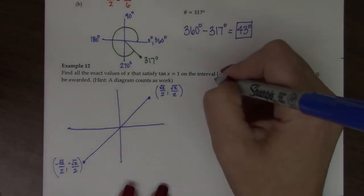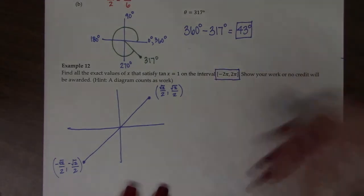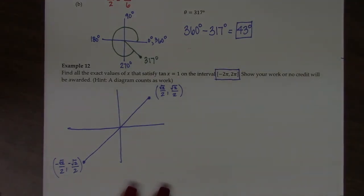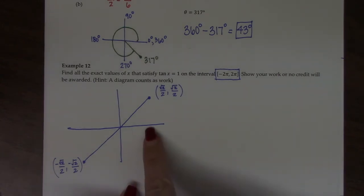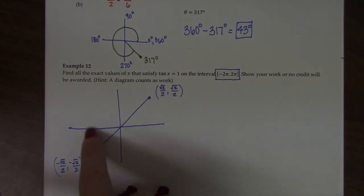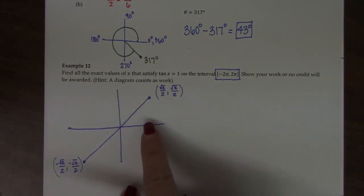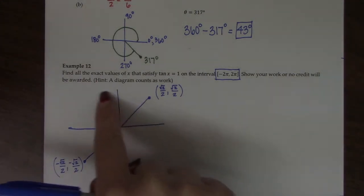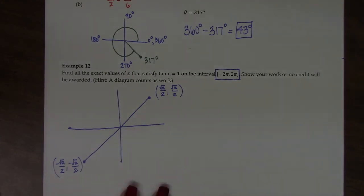But pay attention to this. This is negative 2π to 2π. So that means I've got to go one negative trip around the unit circle. That's 0 to negative 2π. And then if I go from here around, that's telling me 0 to 2π.